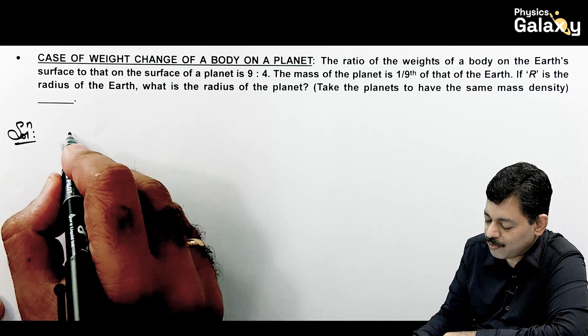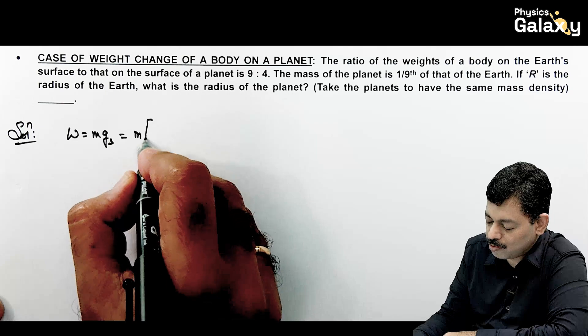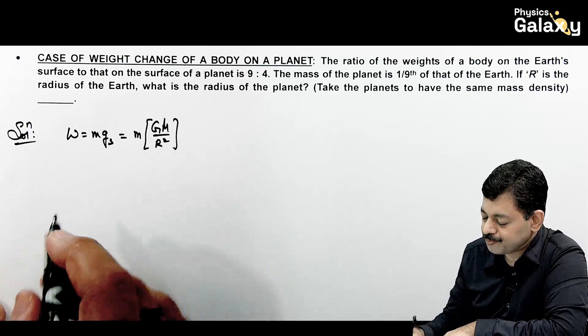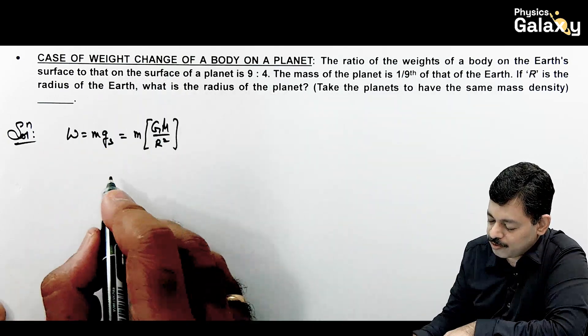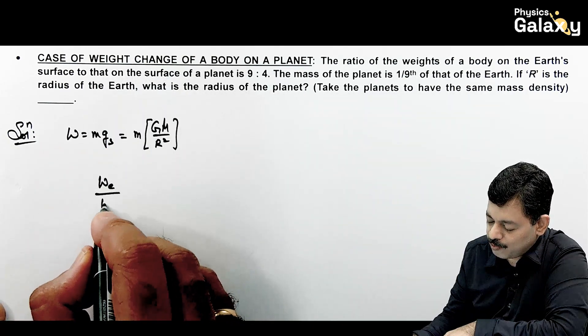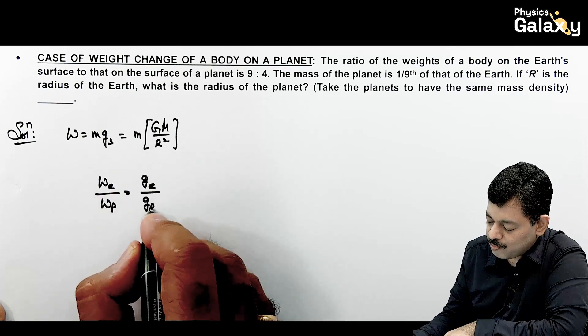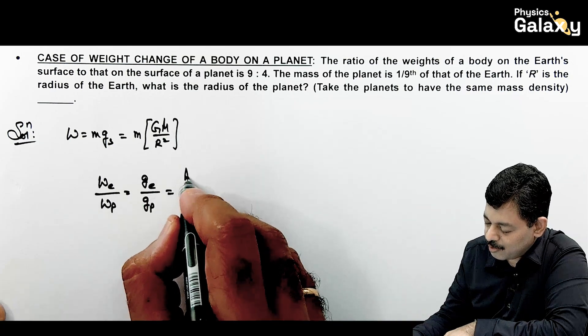We can directly say weight equals m times gs, where mgs = gm/r². This is the expression we use. If we talk about the weight ratio on Earth to that on the planet surface, weight on Earth upon weight on planet—m gets cancelled out. It is g on Earth surface upon g on planet.